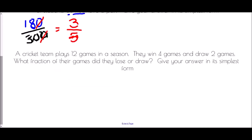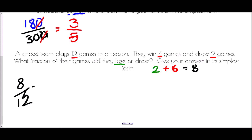A cricket team plays 12 games in a season. They win 4 games and draw 2 games. What fraction of their games did they lose or draw? They won 4 and drew 2, so from 12 total, they lost 6. The number of games drawn or lost is 2 plus 6, which equals 8. So they drew or lost 8 out of 12 games. Dividing both by 4 gives 2 over 3 — two thirds of the games they drew or lost.